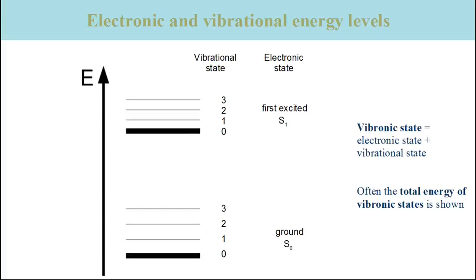In the combined illustration, the bold line represents the energy of the electrons in the ground state plus the energy of the nuclear vibrations in their ground state — in other words, the total energy of the molecule in the ground state. The upper bold line illustrates the energy in the electronically excited state and in the vibrational ground state of the electronically excited state. When one considers both electronic states and vibrational states together, one uses the technical term vibronic state.